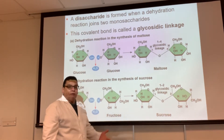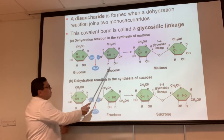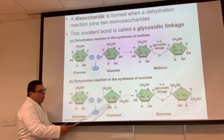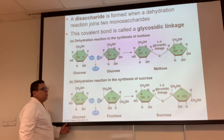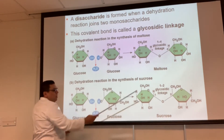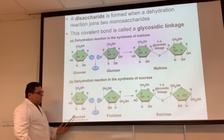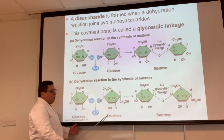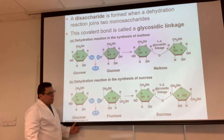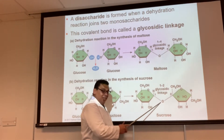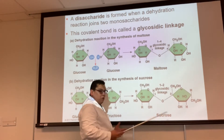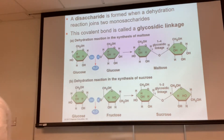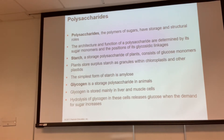Between two sugars you have a glycosidic linkage, which is a covalent bond. You can link two glucose molecules together to get maltose, or link glucose with fructose to get sucrose — your table sugar, the sugar you put in your coffee. Dehydration synthesis links them through a glycosidic linkage making sucrose.